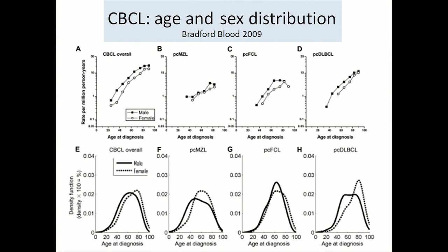Looking at the distribution of cases, there is an overall increase with age. Interestingly, primary cutaneous diffuse large B-cell lymphoma, leg type, becomes more likely the older you are — these are highly aggressive lymphomas with an activated B-cell phenotype, typical of very elderly patients. At the opposite end of the spectrum, primary cutaneous marginal zone lymphomas can be seen at any age, but there is definitely a subset of young patients, especially young women, with female predominance and early presentation.